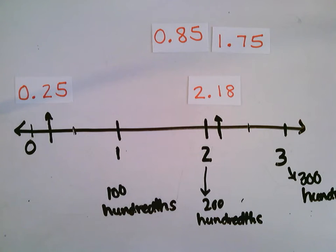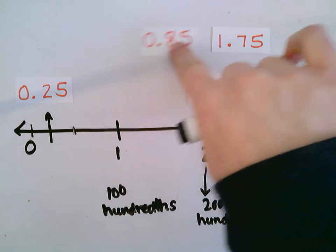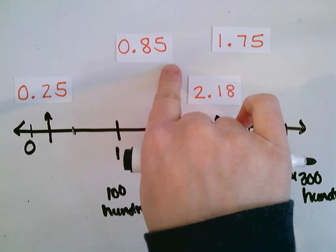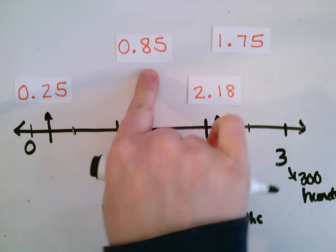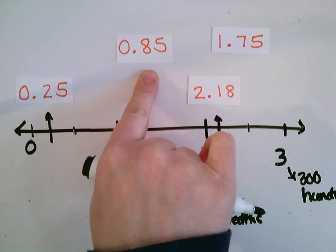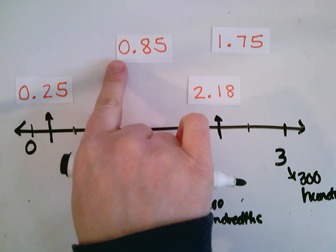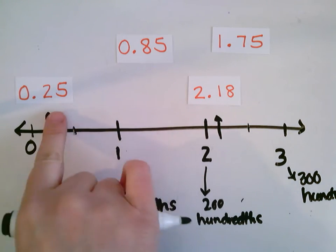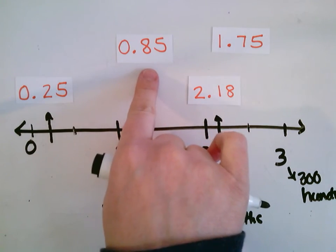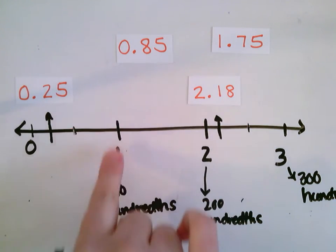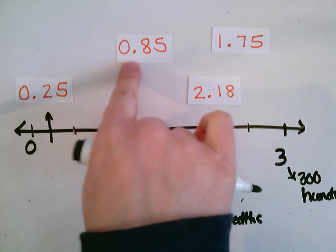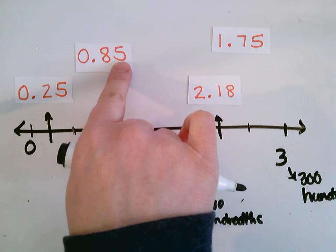My next number that I have is 85 hundredths. I can say 0.85 or I can say 85 hundredths. Again, my whole number is 0. That means it's going to be less than 1. It's falling in here. Think of it like 85 cents, right? I don't have a whole dollar yet. I have less than a dollar, but I have more than nothing.